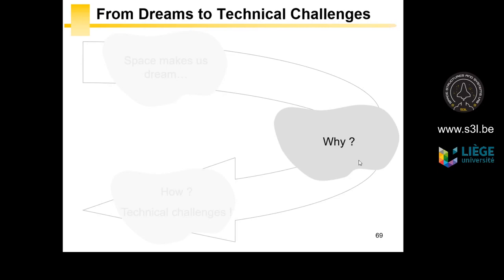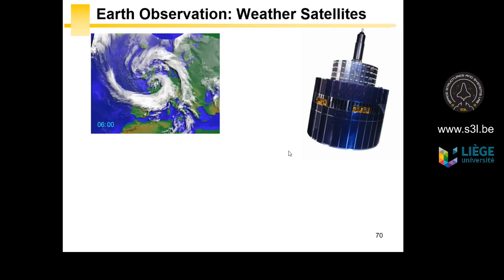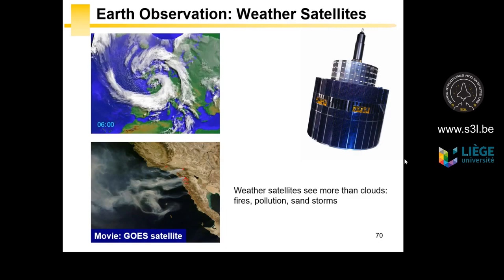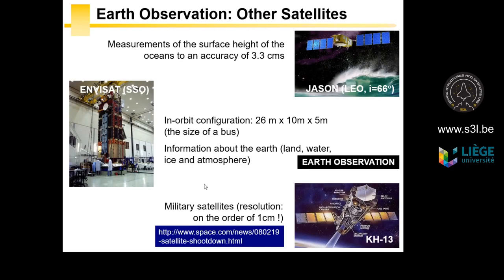Why do we want to go into space? Why do we want to put satellites in orbit? There are many reasons. Mainly, satellite objectives are either scientific or for telecommunications. The most classical example is the weather observation satellite. Today, if we can forecast the weather five days ahead, it's thanks to weather satellites. They can see more than just clouds — they can detect fire, pollution, and sandstorms — and they work in different wavelengths to collect different information.